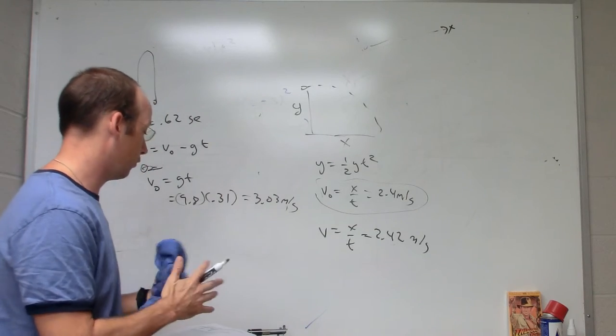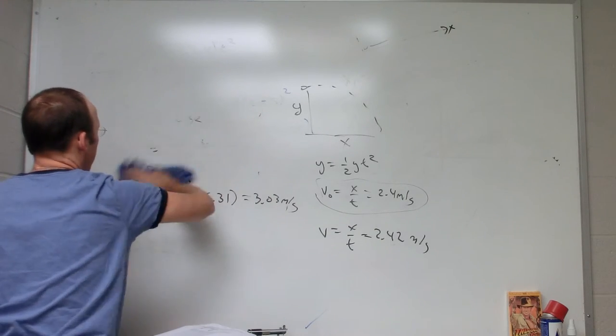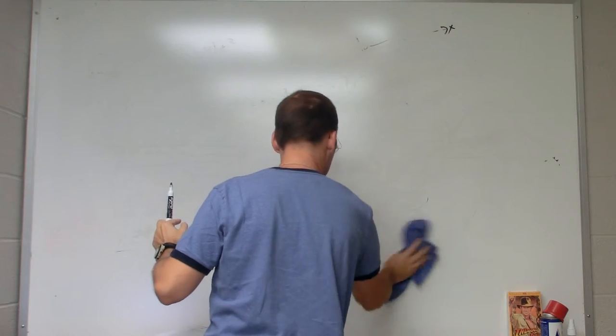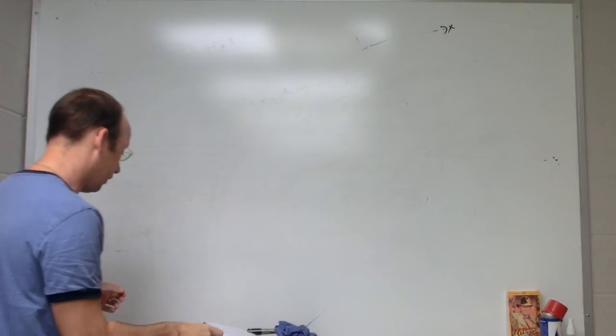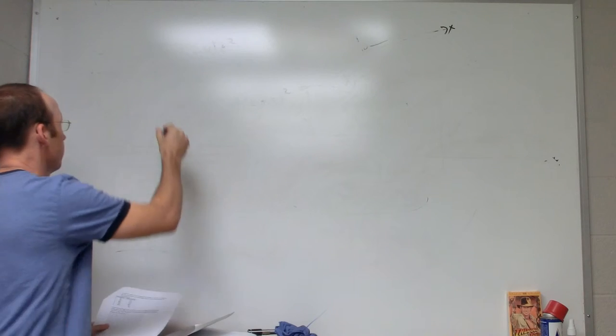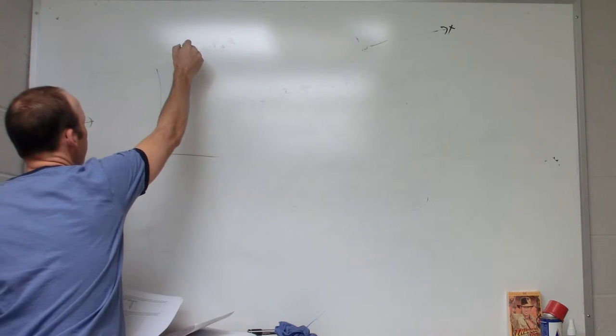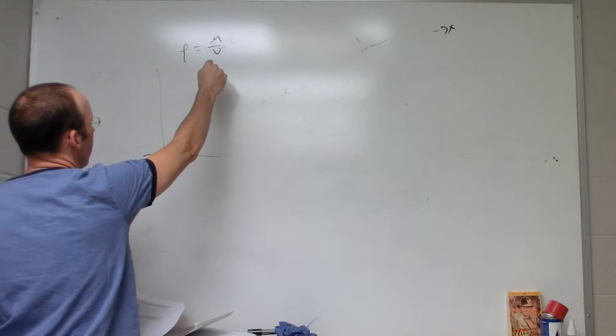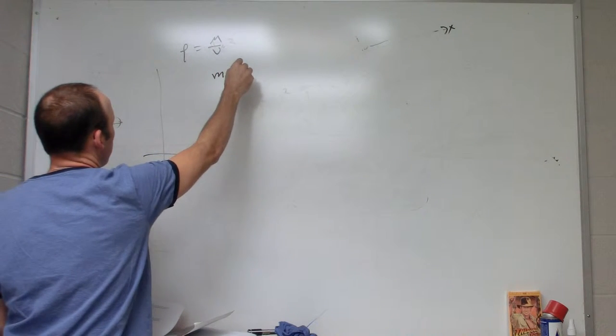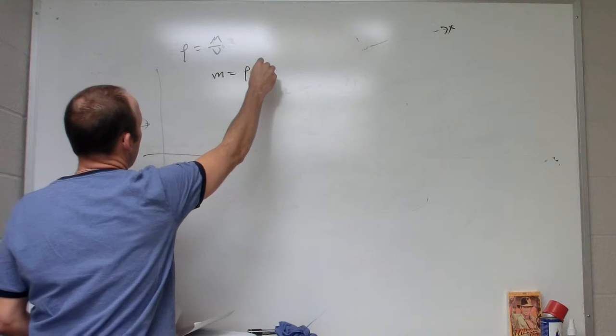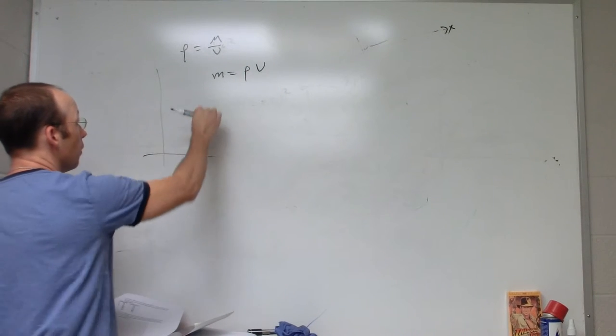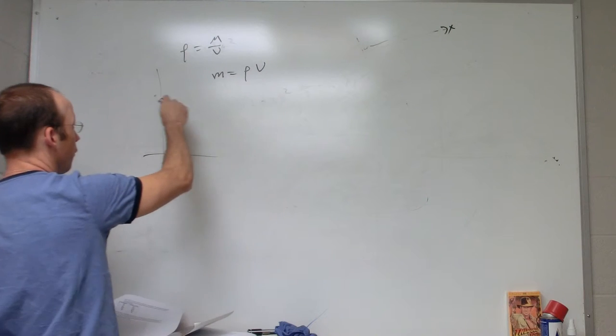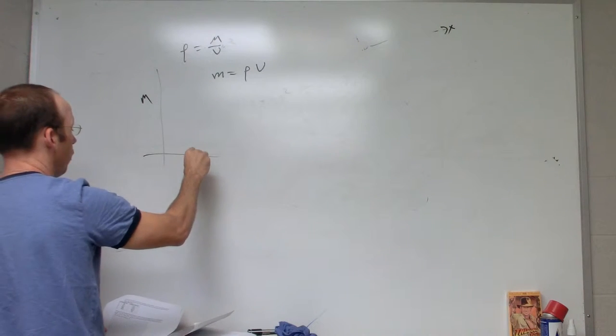Next question. Here I gave you some mass and volume data, and I want you to find the density from a graph. So density is mass over volume. I could write this as mass equals density times volume. So that's a function like y equals slope times horizontal. So if I put this as mass and volume and I get data and I plot it, I can find the slope of this line.